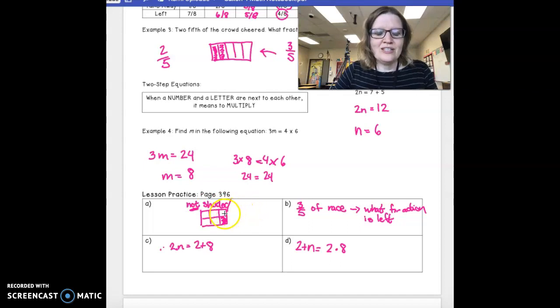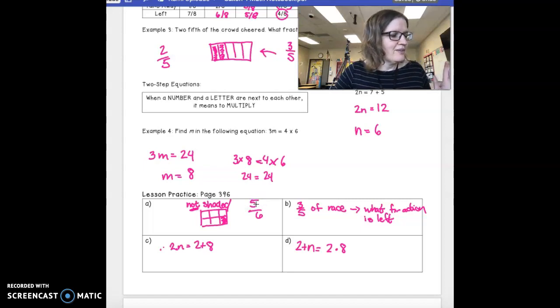We look at this and we know that our denominator is going to be six because it's in six pieces. And we have one, two, three, four, five. Five-sixths of it is not shaded.